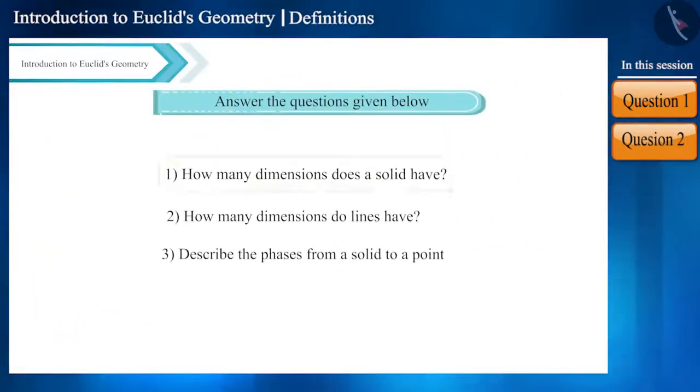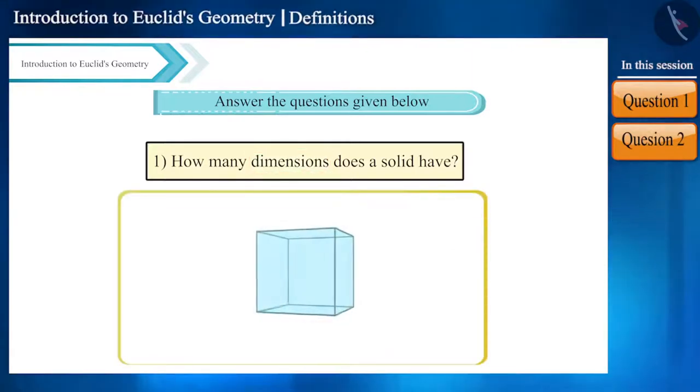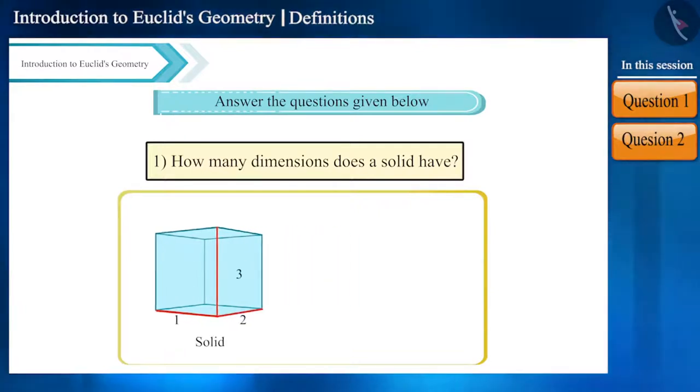Let's see some more questions. In the first question, we have to identify the dimensions of a solid. Any solid object has length, breadth and height. So a solid has three dimensions.